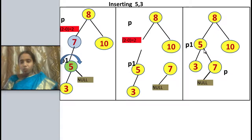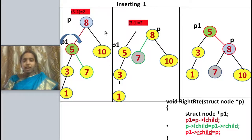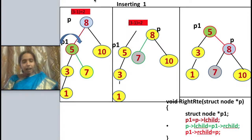The tree now becomes: 8 as root, left child 5, right child 10, with 5's right child being 7. Now inserting 1: it is placed as left child of 3. Checking balance factors: 0 for node 1, plus 1 for node 3, 2 minus 1 for node 5 is plus 1, and 3 minus 1 is plus 2 for node 8 — an imbalanced condition. Node 8 is P and node 5 is P1.